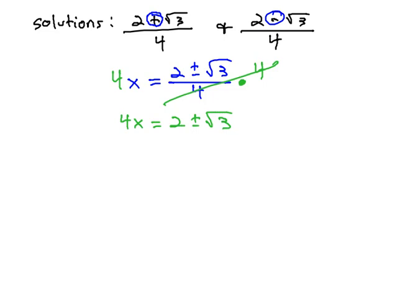Now that the fraction is out of the way, we want to try and get that plus or minus part alone so that we can get rid of it by squaring both sides. We need to get that 2 out of there. We'll subtract 2 from both sides. This gives us 4x minus 2 equals plus or minus the square root of 3.